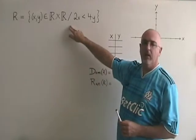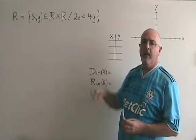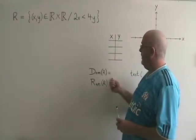In this question, we are given an inequality in set builder notation, and we are asked to graph it and to give the domain and range.